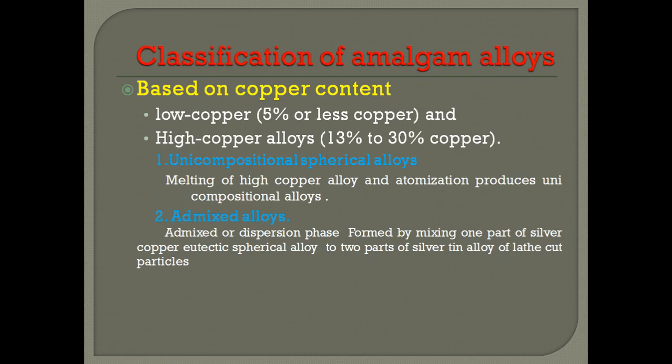These high copper alloys are also divided into unicompositional alloys and admixed alloys. In admixed alloys, there are two components: one part of the silver-copper eutectic spherical alloy is mixed with two parts of the silver-tin alloy of lathe cut particles and unicompositional spherical alloys.